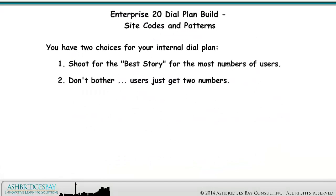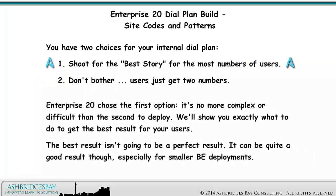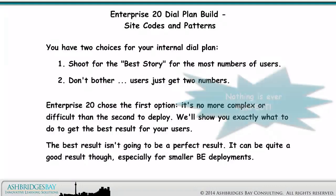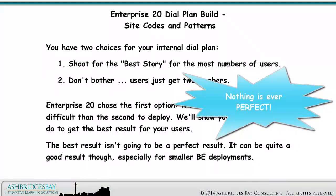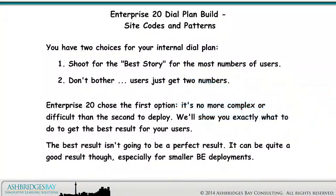You have two choices for your internal dial plan. Number one: shoot for the best story for the most numbers of users. Number two: don't bother — users just get two numbers. Enterprise 20 chose the first option. It's no more complex or difficult than the second to deploy. We'll show you exactly what to do to get the best results for your users. The best result isn't going to be a perfect result, but it can be quite good, especially for smaller BE deployments.